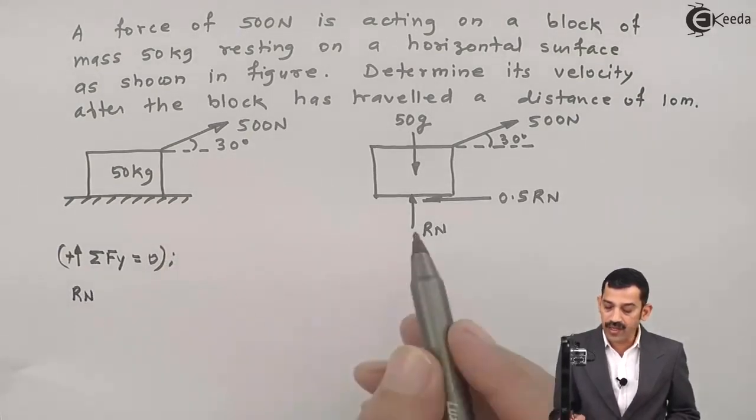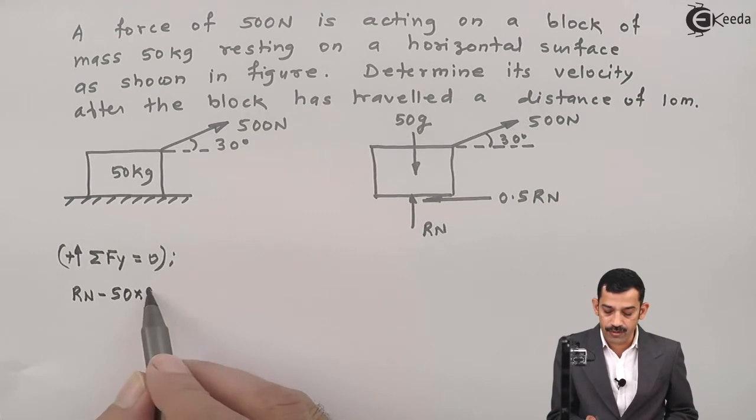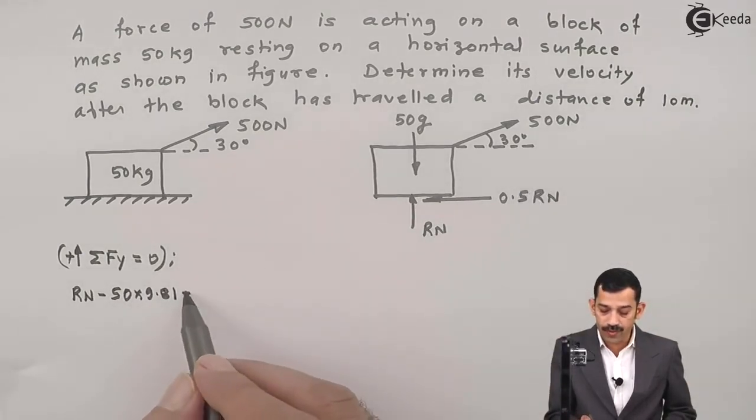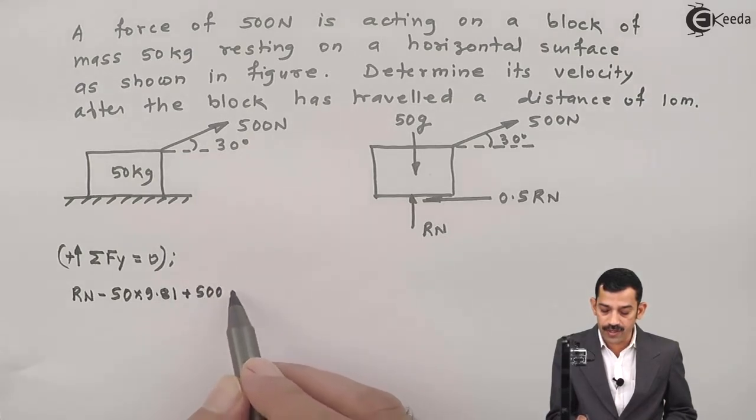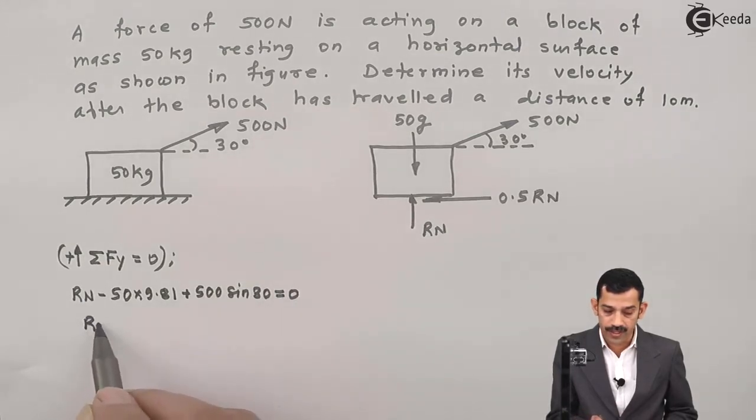What forces act in vertical direction? The first one is RN. Next force is weight that acts in downward direction, 50 into g is 9.81. Substitute here the component of 500 acts in upward direction, 500 sine of 30. This one is equal to 0.